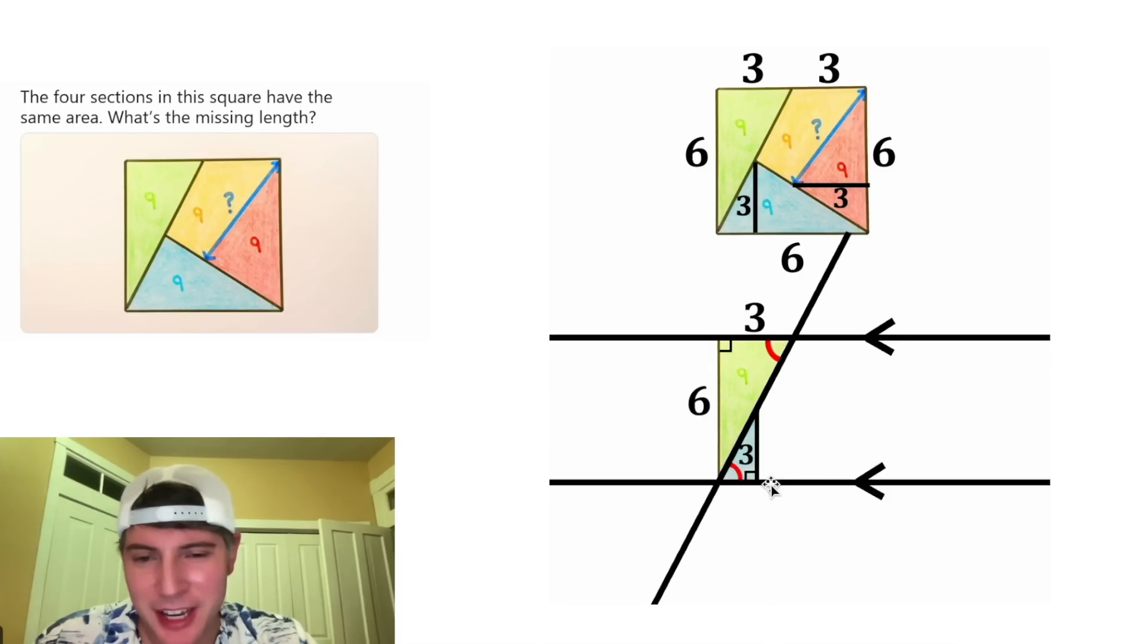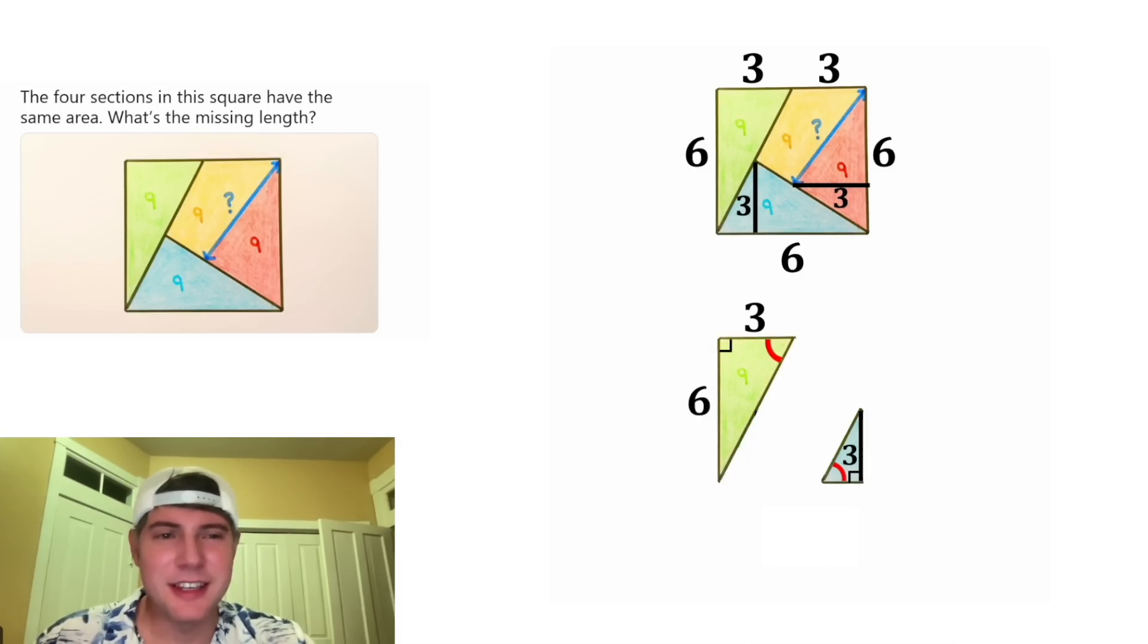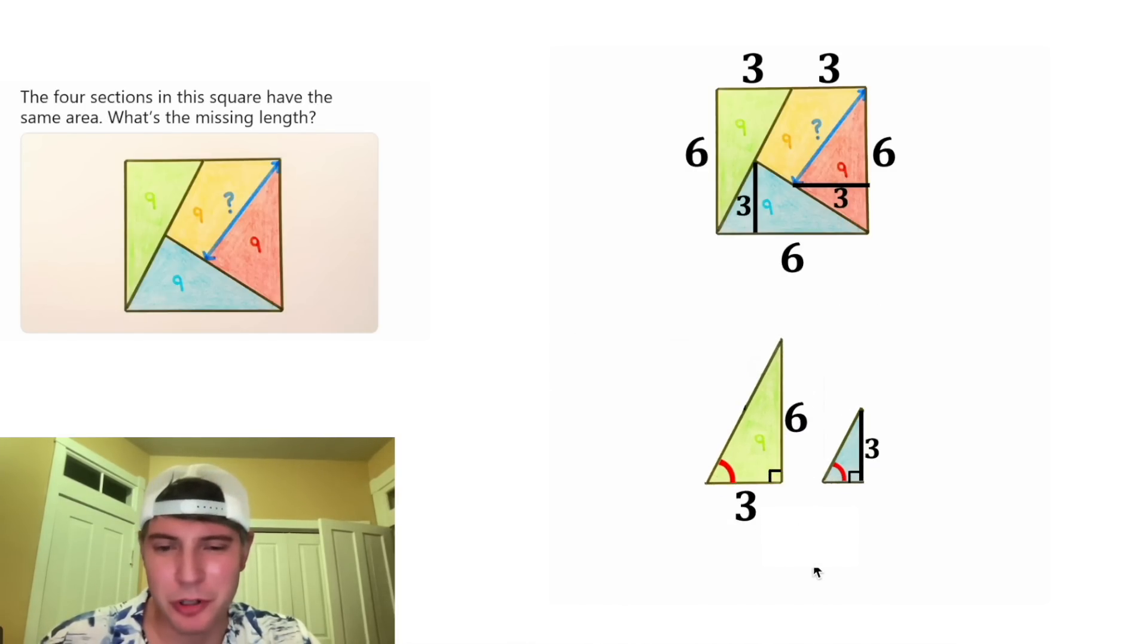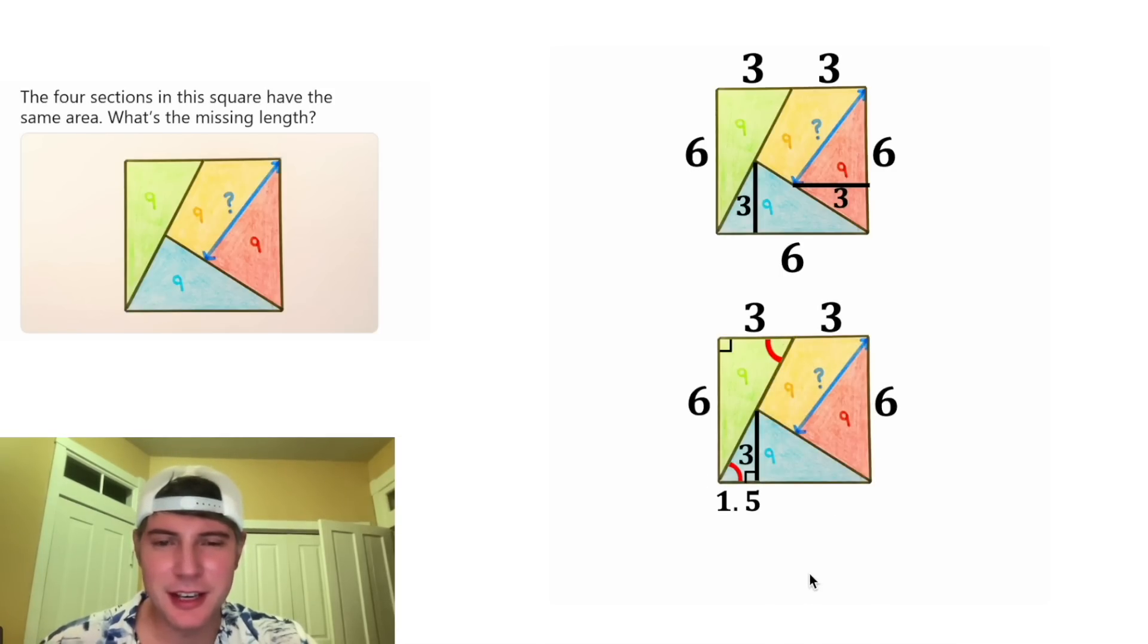Anytime these are parallel, alternate interior angles will be congruent. That means these corresponding angles in these two triangles are the same. Since these two triangles have two corresponding angles, we know they're similar triangles. That means the sides will be proportional. This 3 is half of the 6, which means the base is half of the height. Same thing is going to happen here. This base will be half the height and half of 3 is 1.5. Let's put these back together and bring back everything else. Since this is 1.5 and the whole base is 6, this last portion will be 4.5. Let's change it up here as well, so this 6 is going to split into 1.5 and 4.5.